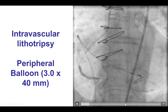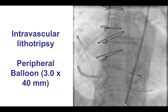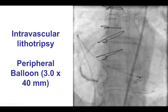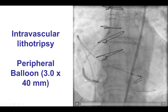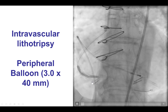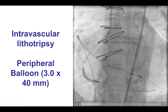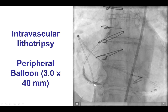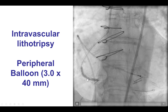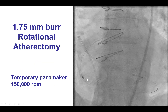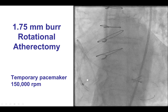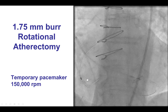We decided to use intravascular lithotripsy. This is the peripheral balloon 3.0 by 40 mm, which was inserted distally and inflated at four atmospheres. We gave the full 200 pulses of the balloon. Unfortunately, that did not work either — there remained a waist, and after post-dilation, the same problem persisted.